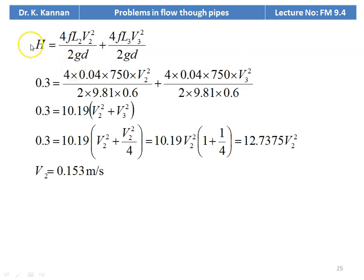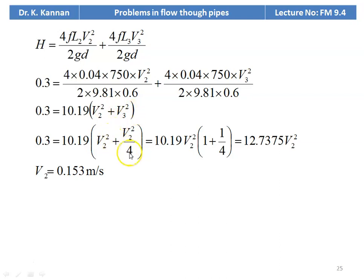We write the head loss equation: H = 4FL2V2²/2GD + 4FL3V3²/2GD = 0.3. Substituting L2 = L3 = 750 m: 4 × 0.04 × 750 × V2² / (2 × 9.81 × 0.6) + 4 × 0.04 × 750 × V3² / (2 × 9.81 × 0.6) = 0.3. Combining terms: 10.19 × (V2² + V3²) = 0.3. Substituting V3 = V2/2: 0.3 = 10.19 × V2² × (1 + 1/4) = 12.735 V2².